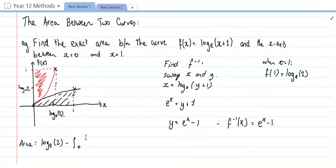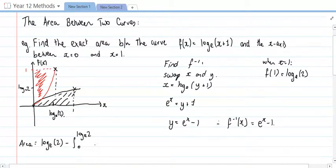Right, so just continuing on, that is the area of the rectangle, and I'm taking away the area beneath the red curve there, which is the integral between 0 and log e of 2 of that function, which is e to the x minus 1, and then dx.